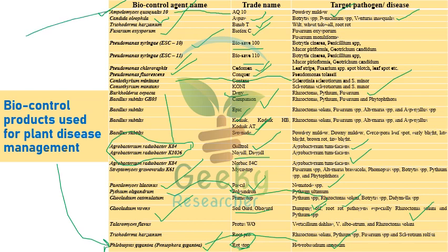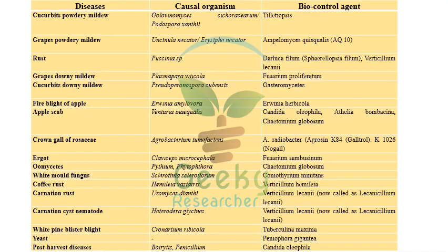To summarize the key biocontrol agents: Ampelomyces quisqualis, Candida oleophila, Coniothyrium minitans, Agrobacterium radiobacter K84 and K1026, and Paecilomyces lilacinus are very important. Questions may ask which biocontrol agent is exploited against nematodes — the answer is Paecilomyces lilacinus — or which is the first biocontrol agent developed, which is Phlebiopsis gigantea acting against Heterobasidion annosum.